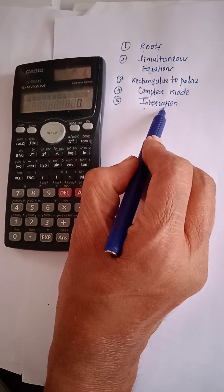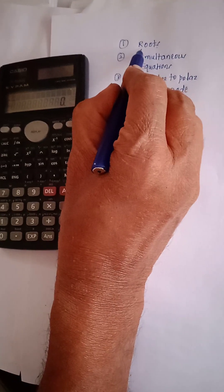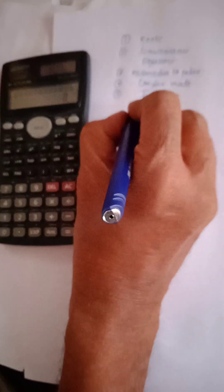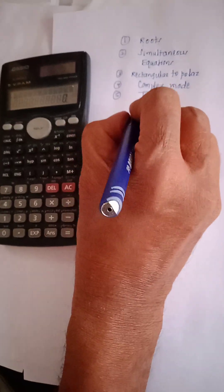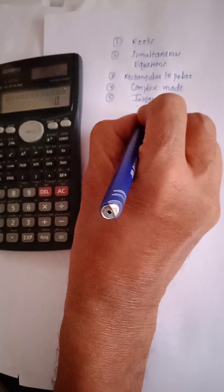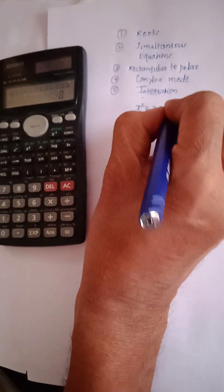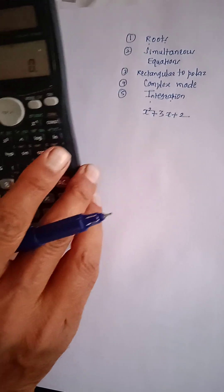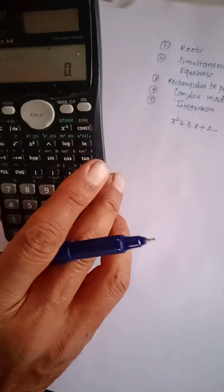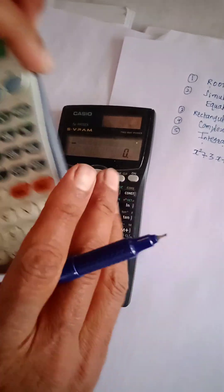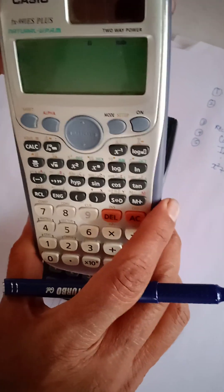We'll also cover how to perform integration on the calculator. For the first part, we'll discuss how to calculate roots of a quadratic equation. As an example, consider x squared plus 3x plus 2. I need to calculate the roots of this equation. I will be using two calculators: the FX-991MS and the FX-991EX.